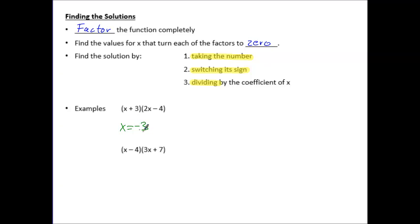You can always plug that number back into the parentheses to verify: negative three plus three is zero, so that checks out. The other solution: take the number negative four, switch the sign to make it positive, divide by the coefficient of x which is two — so four divided by two — that's two.